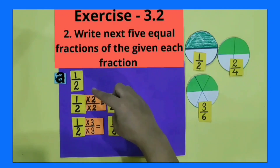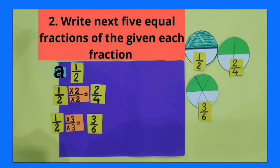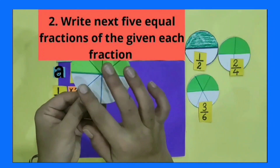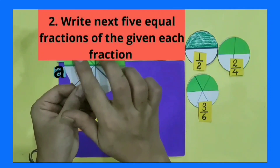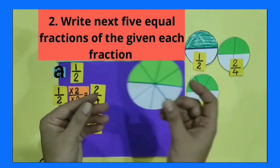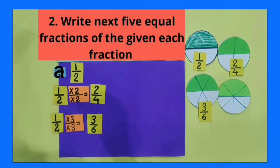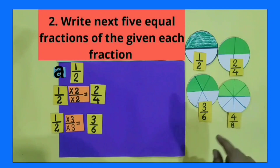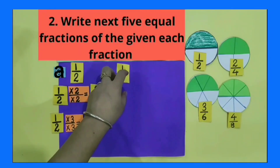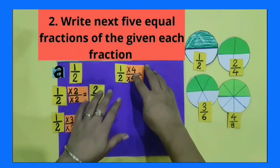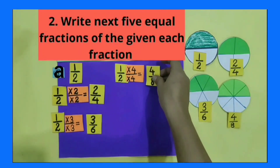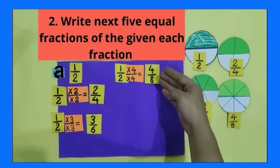I have a circular shape which is divided into 8 equal parts, out of which 4 parts are colored. These 4 parts are equivalent to each other. 4 parts out of 8 equal parts means 4 by 8. With which number will I multiply 1 by 2 to get 4 by 8? Yes, I will multiply 1 by 2 with number 4. 1 by 2 multiplied by 4 by 4: 1 multiply 4 is equal to 4, and 2 multiply 4 is equal to 8. Our next equivalent fraction is 4 by 8.